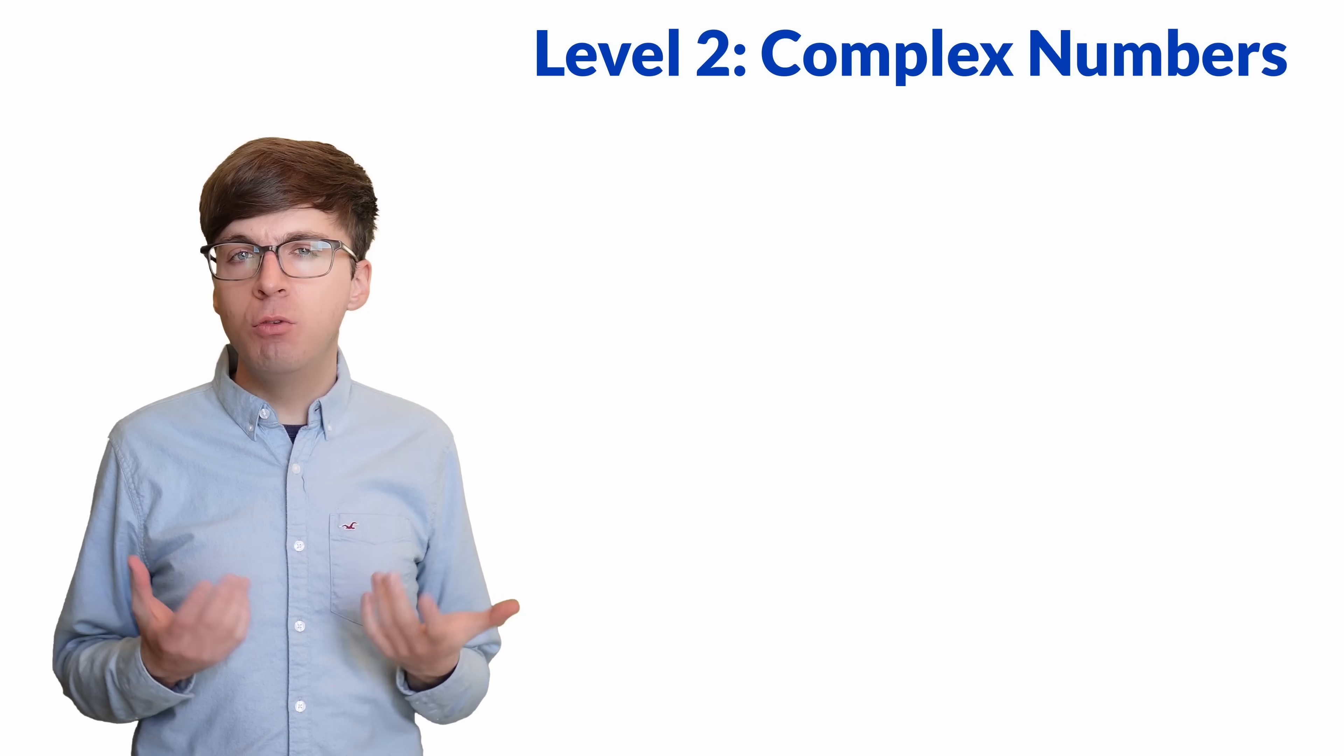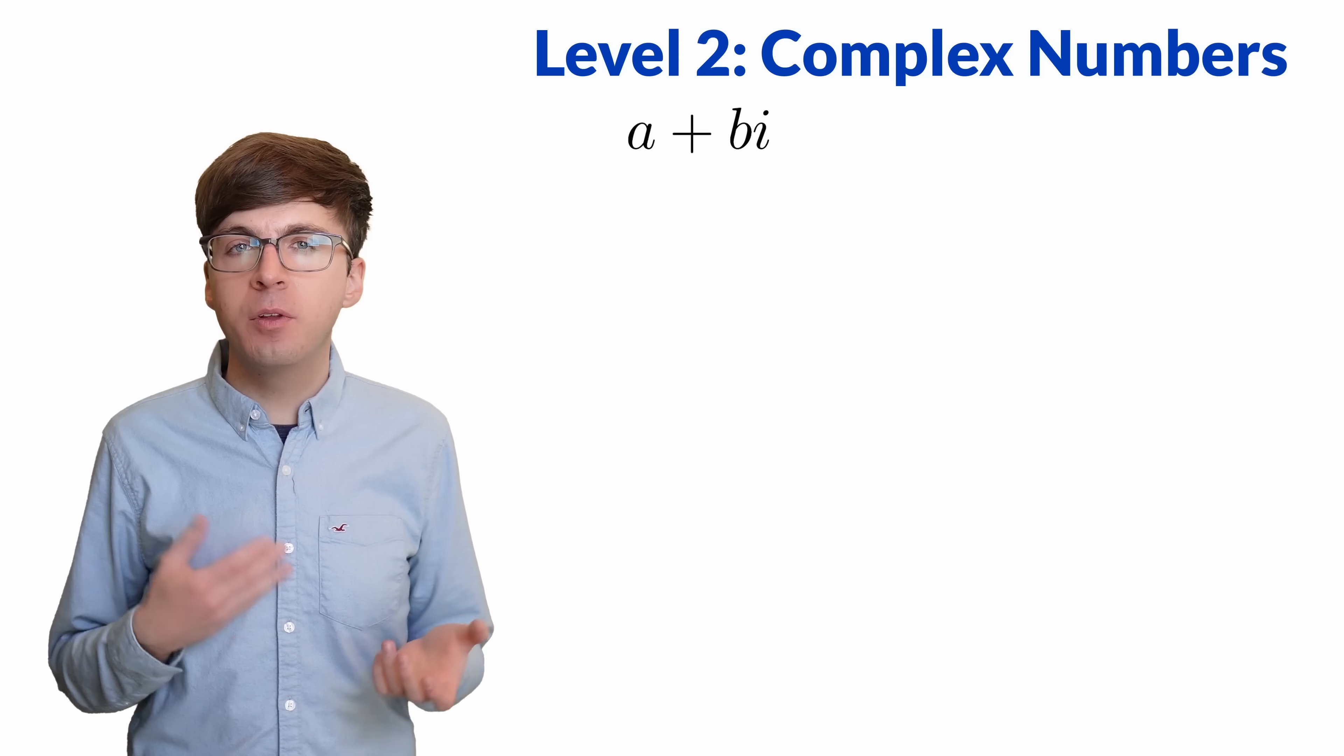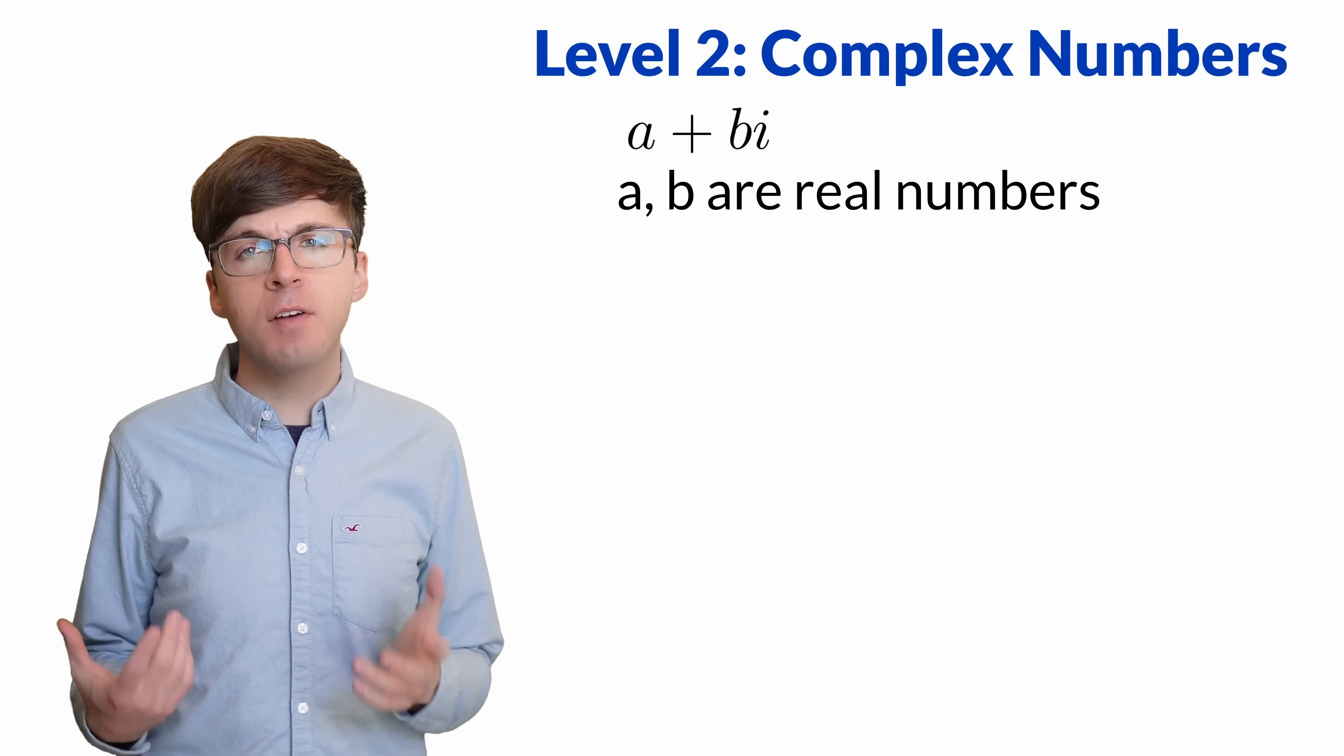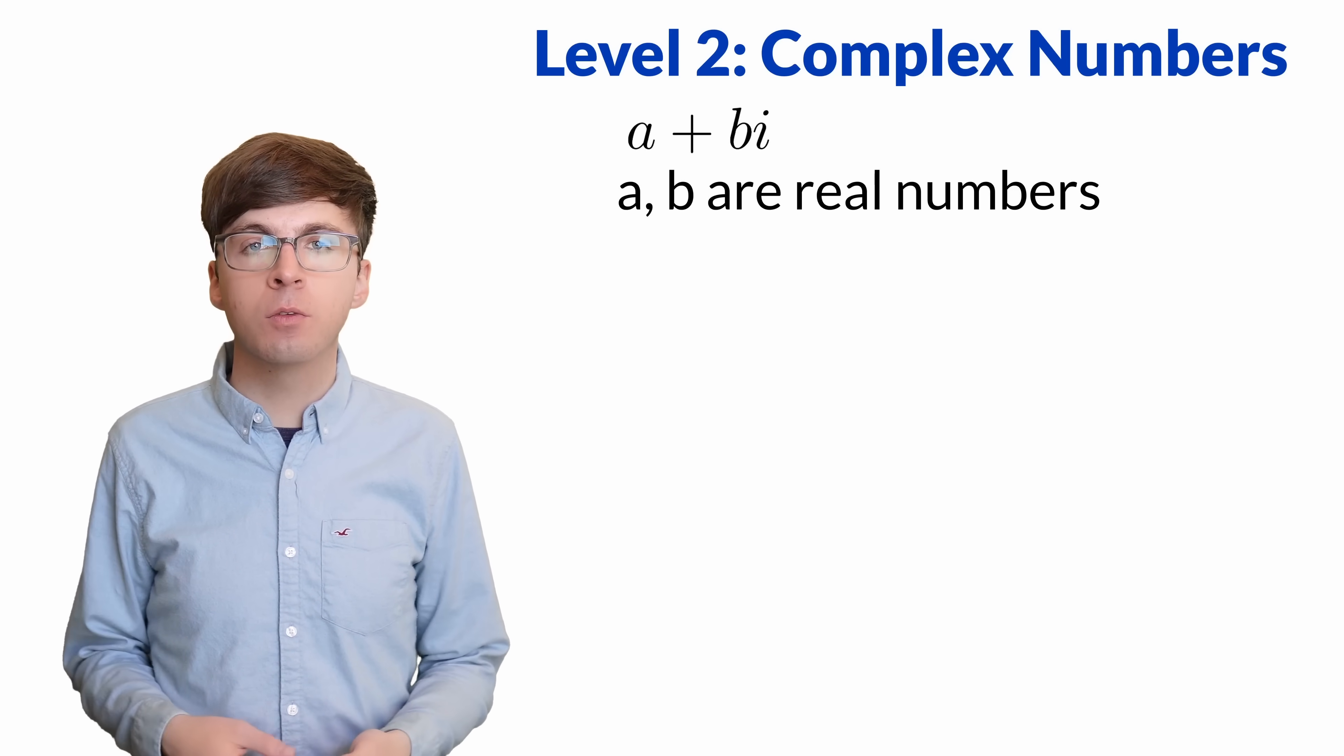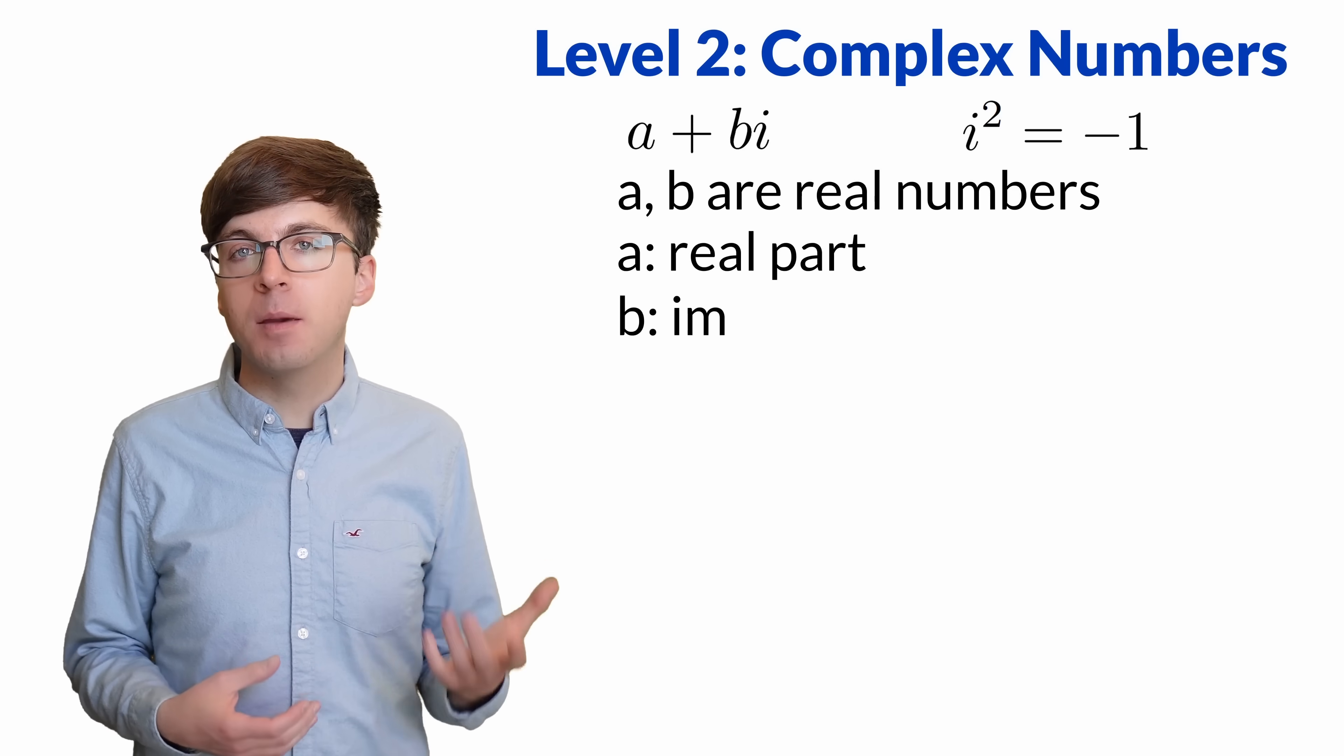For level 2, let's look at the usual way that we define complex numbers today. We define the complex numbers to be the expressions a plus bi, where a and b are real numbers, and i is an abstract symbol that's part of our notation. We can think of i as being the square root of negative 1 that we needed to use Cardano's formula. So i squared equals negative 1. We call a the real part, and b the imaginary part.